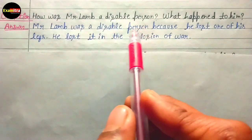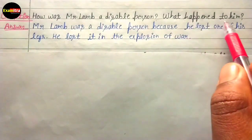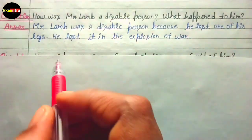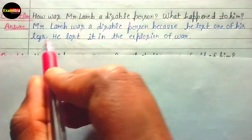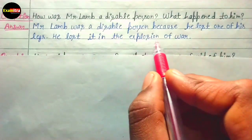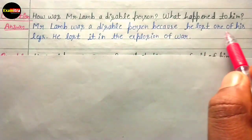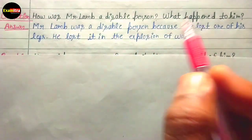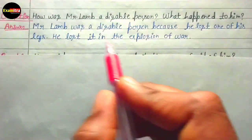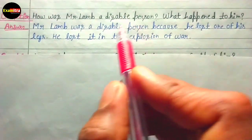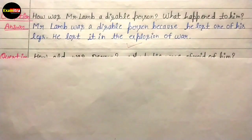The next question is: How was Mr. Lamb a disabled person? Mr. Lamb was a disabled person because he lost one of his legs. He lost his leg in the explosion of war. So the question is complete.